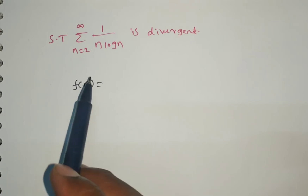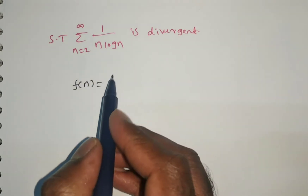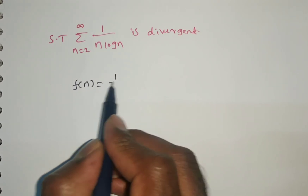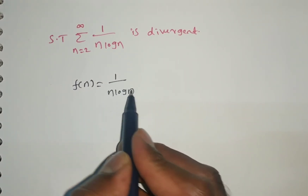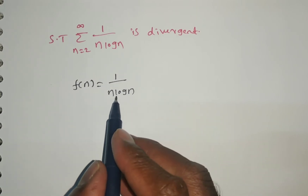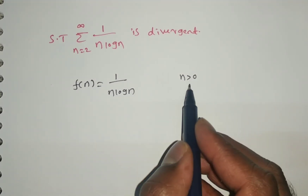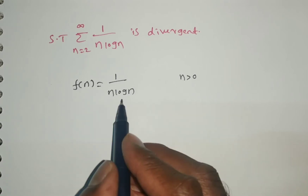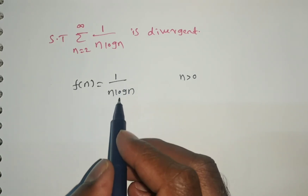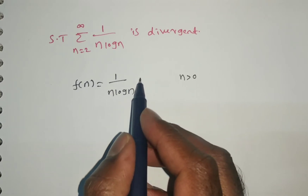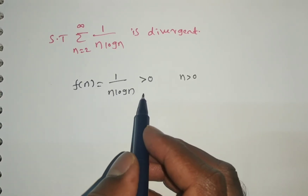For that, we are comparing the given series with summation f of n. So we can say f of n is equal to 1 by n log n. We know that n is greater than 0 — n is a natural number, so it is positive. Log n is also positive, so n times log n is positive. Then 1 by n log n is also positive. So the series is a positive term series.